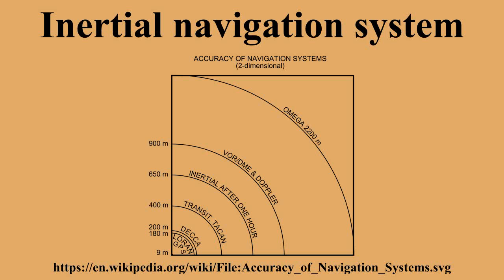Inertial navigation is a self-contained navigation technique in which measurements provided by accelerometers and gyroscopes are used to track the position and orientation of an object relative to a known starting point.